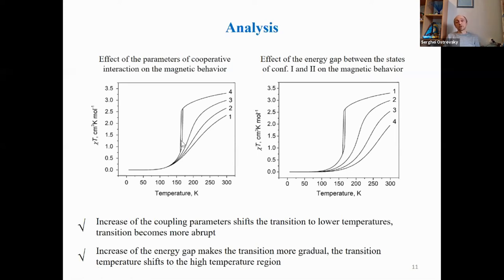This slide illustrates the effect of both parameters on the magnetic behavior of the complex. As seen in the left figure, increasing the coupling parameter shifts the transition to lower temperatures and makes the transition more abrupt; at some value of the parameter, at fixed energy gap, a hysteresis loop appears. Conversely, increasing the energy gap between configurations 1 and 2 shifts the transition temperature to the higher temperature region and makes the corresponding transition smoother.